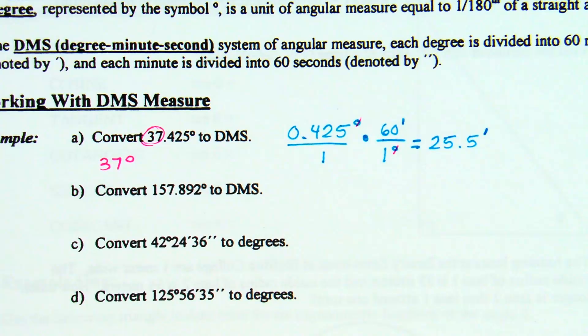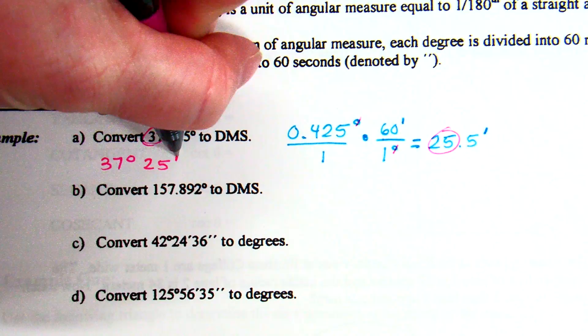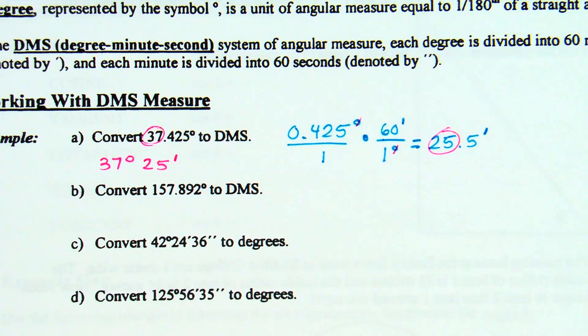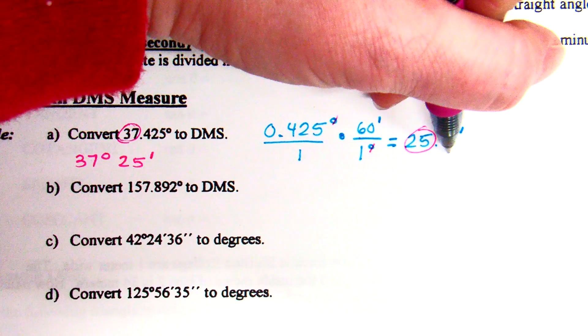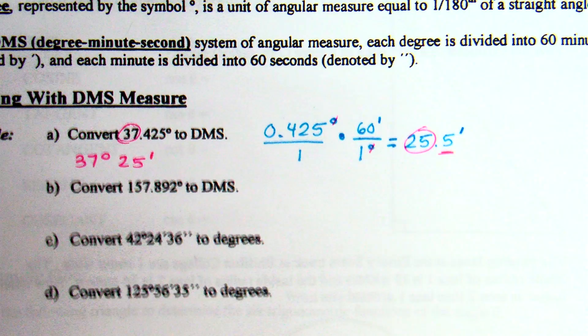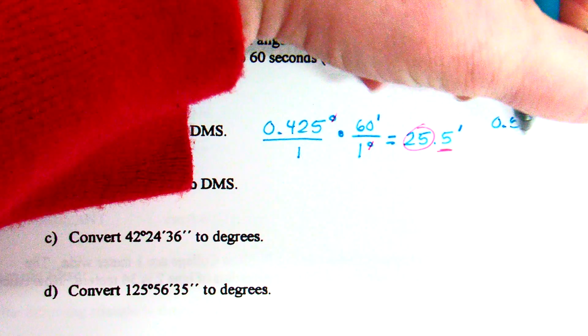So, the next part of my answer is, what's my whole number of minutes? 25. So at this point, I'm at 37 degrees, 25 minutes. And now I want to figure out how many seconds I'm at. Some of you are looking at just knowing this one. Do we know how many seconds that's going to be? 30 seconds, because it's half a minute.